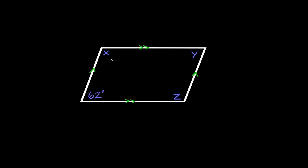For this problem you can see we have x, y, and z that we're trying to solve for, and we're given one angle that is 62 degrees. Now the thing about parallelograms is that the consecutive angles are supplementary. Consecutive angles are just angles that are next to each other. So for example, this 62 and this x — these two angles are consecutive because they're next to each other.